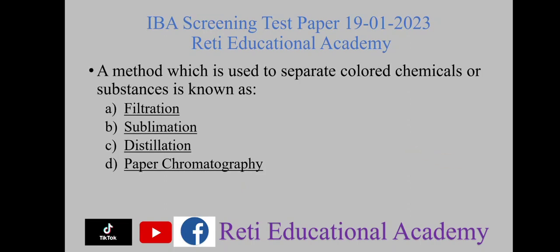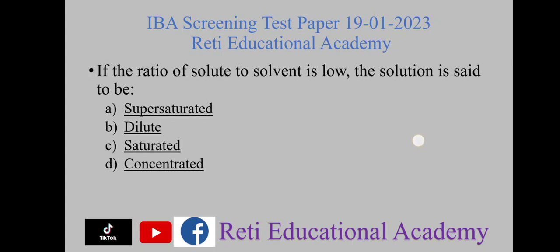Question number three: a method which is used to separate colored chemicals or substances is known as — A) filtration, B) sublimation, C) distillation, D) paper chromatography. The right option is D, paper chromatography.